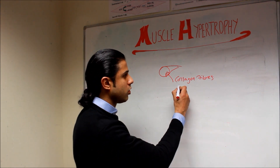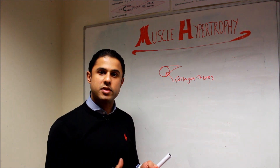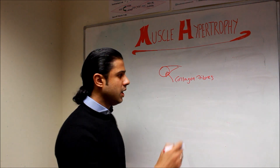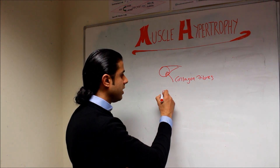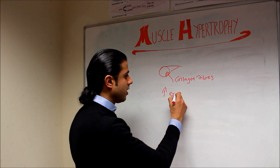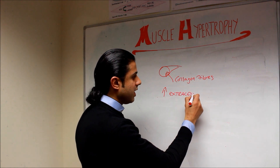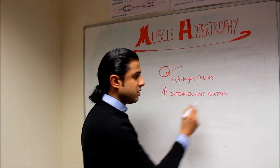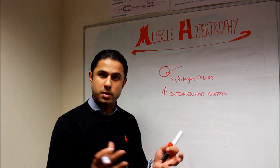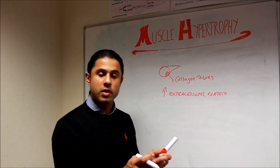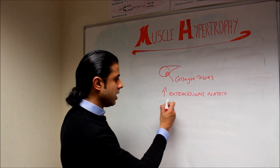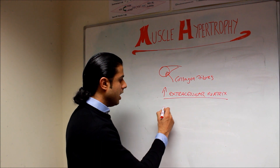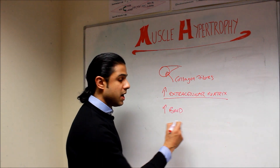You also get an increase in the extracellular matrix — the connective tissue surrounding the muscle fibers — and this expansion can actually contribute to hypertrophy as well. So increases in muscle size are not just about adding sarcomeres in parallel; the extracellular matrix also contributes to overall muscle size.